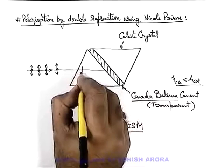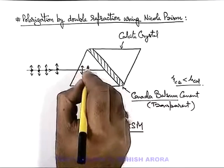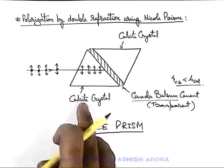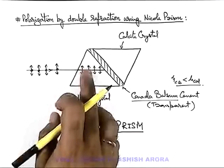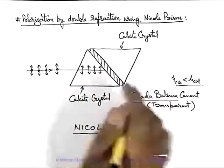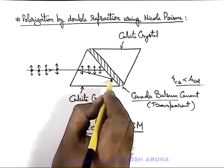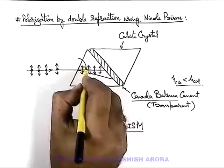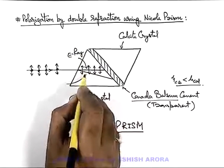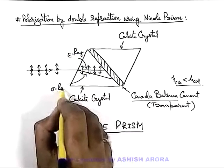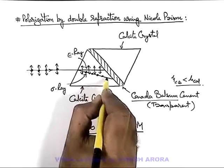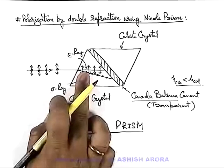The e-ray has vibrations in the plane of incidence, for which the relative refractive index of calcite crystal is very low, so it does not follow the laws of refraction and will pass straight. The other one is the ordinary ray, the o-ray, in which the oscillations are perpendicular to the plane of incidence.